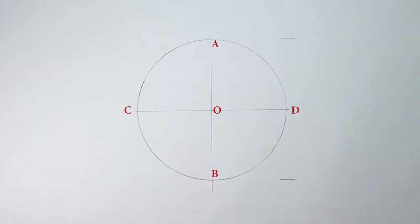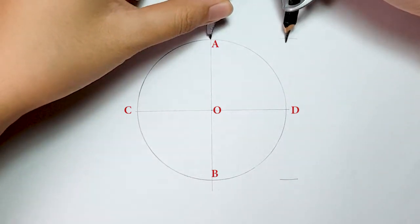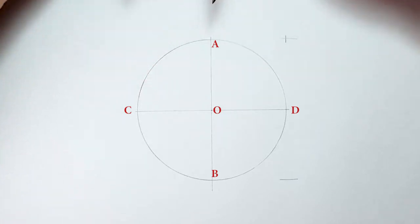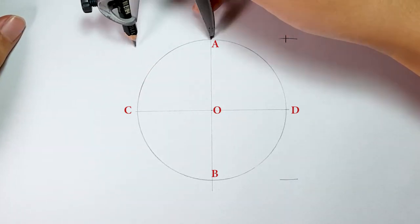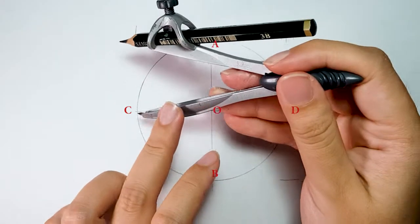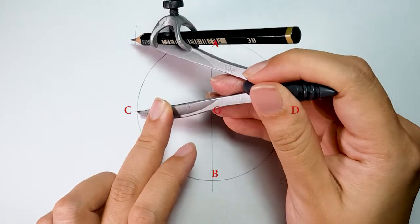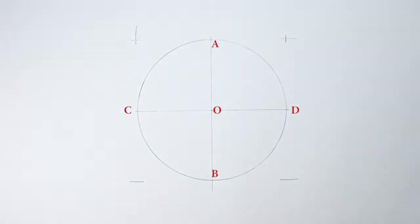Next, place your compass on point A to draw marks on right and left. Then, place your compass on point C and point D to repeat the steps.